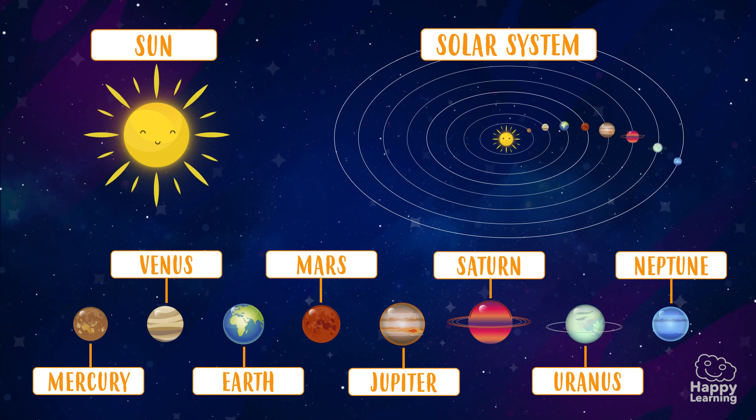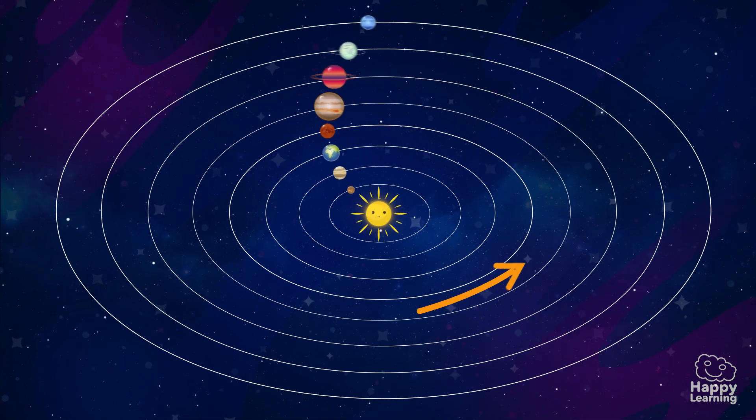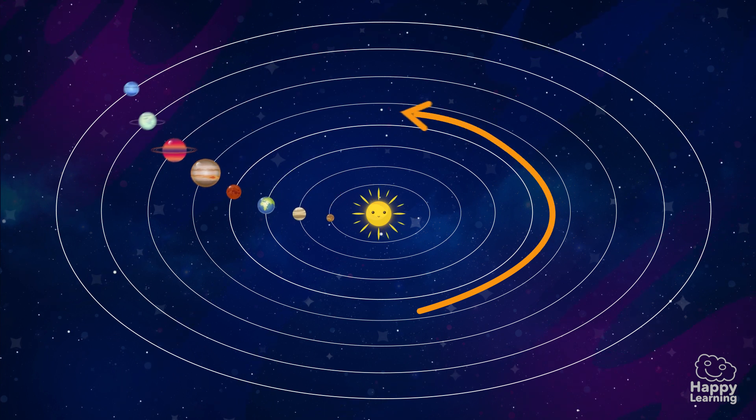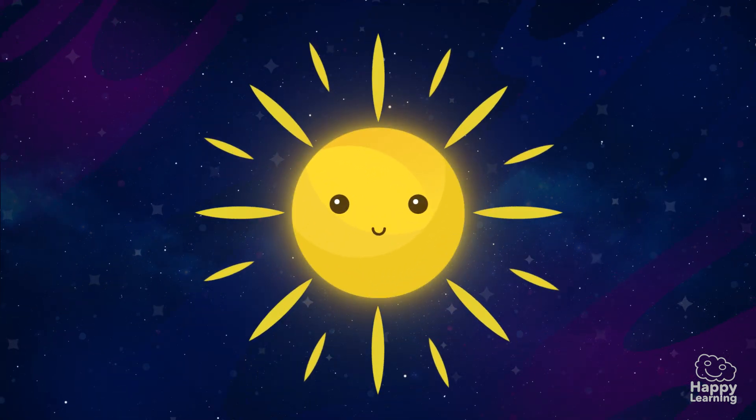I almost forgot! The movement all planets make around the sun is called rotation movement. Goodbye happy friends!